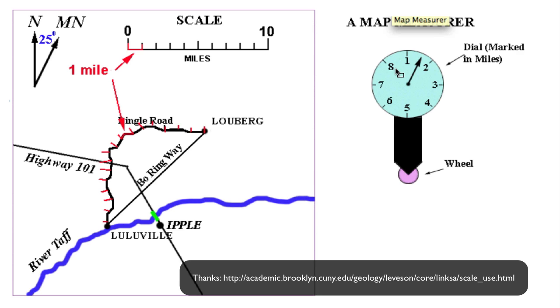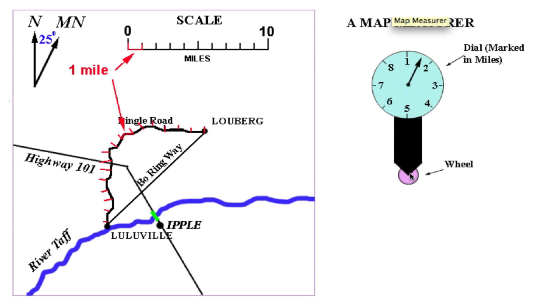But really, they have this tool called a map measure, which has a wheel at the bottom and you roll it along a curved distance and that'll tell you how far you're going.